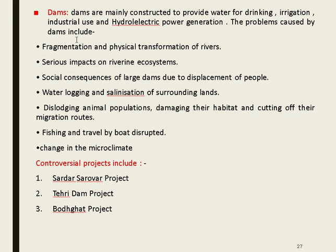Dams are mainly constructed to provide water for drinking, irrigation, and industrial use, but they cause problems including fragmentation and physical transformation of rivers, serious impact on riverine systems, social consequences from displacement of people, water logging, salinity, disruption of animal populations and habitats, disruption of fishing and travel, and change in microclimate. Controversial projects include the Sardar Sarovar project, Tehri Dam project, and Bodhghat project.